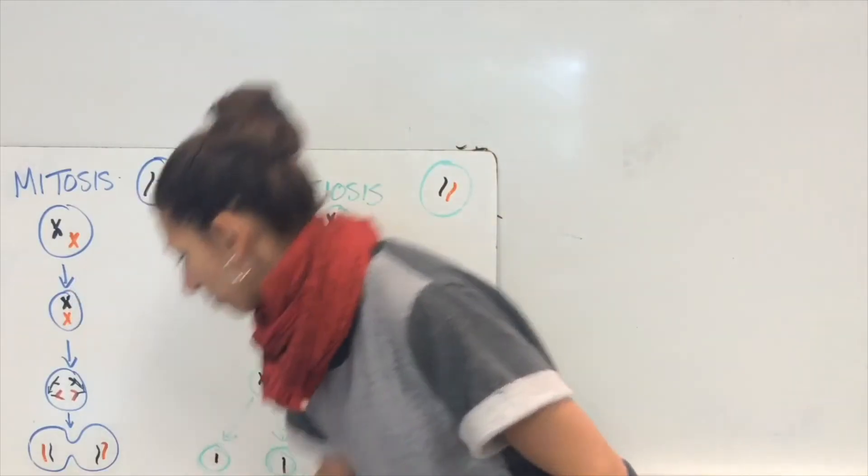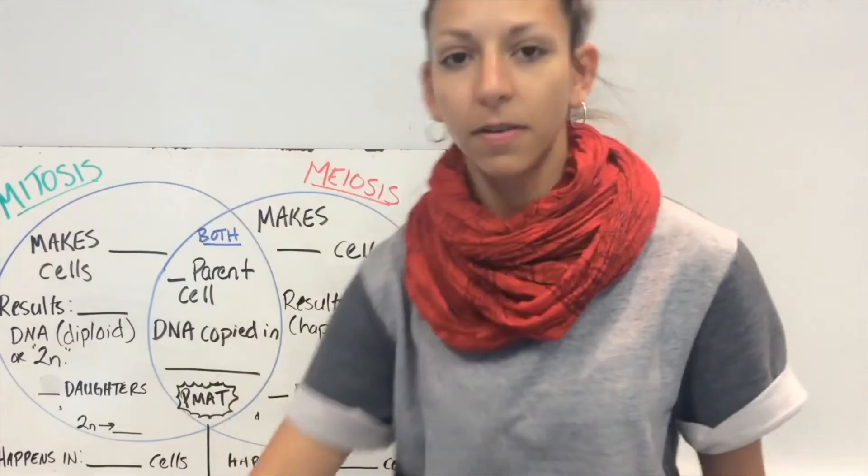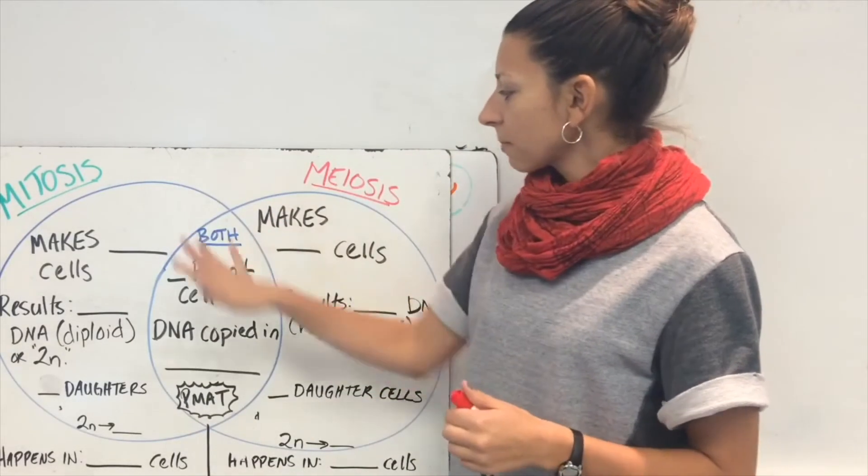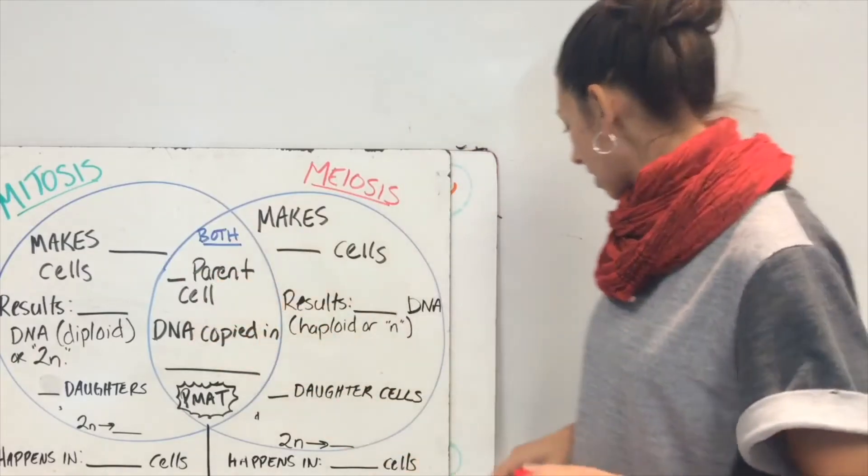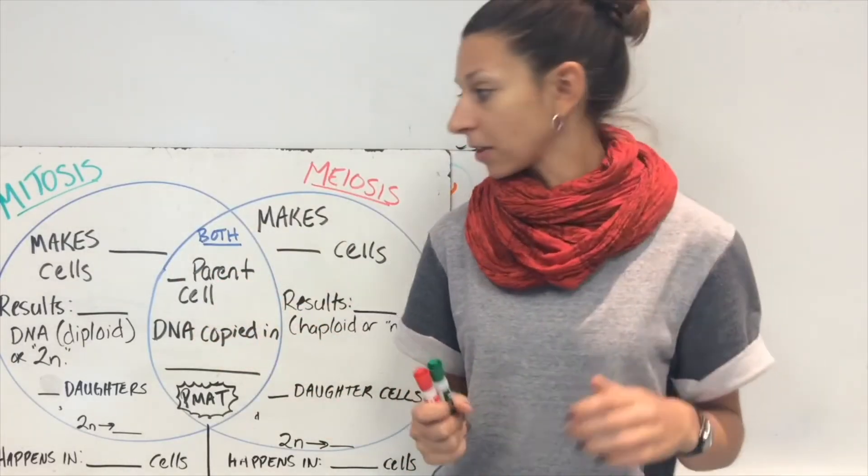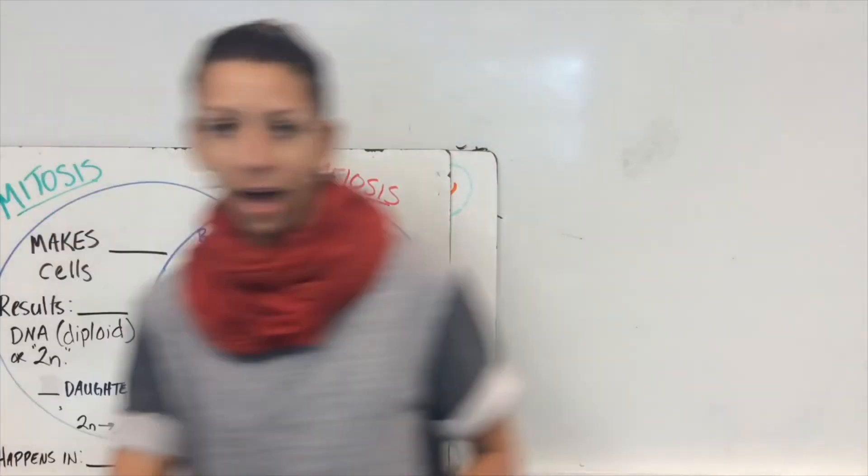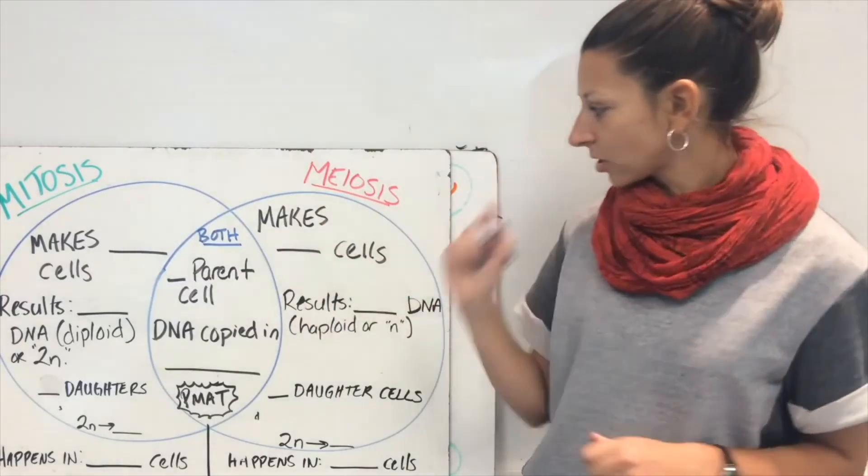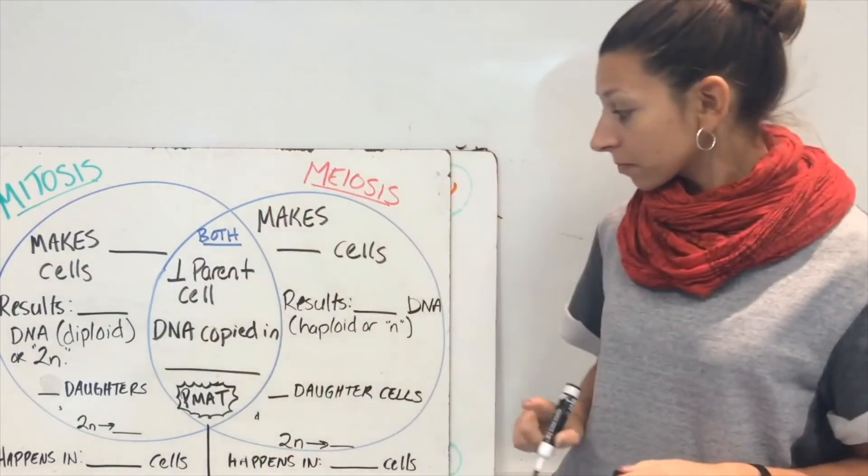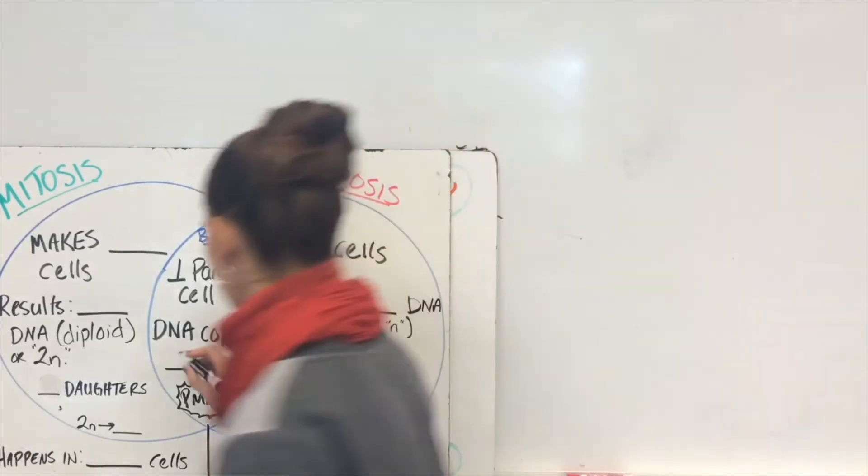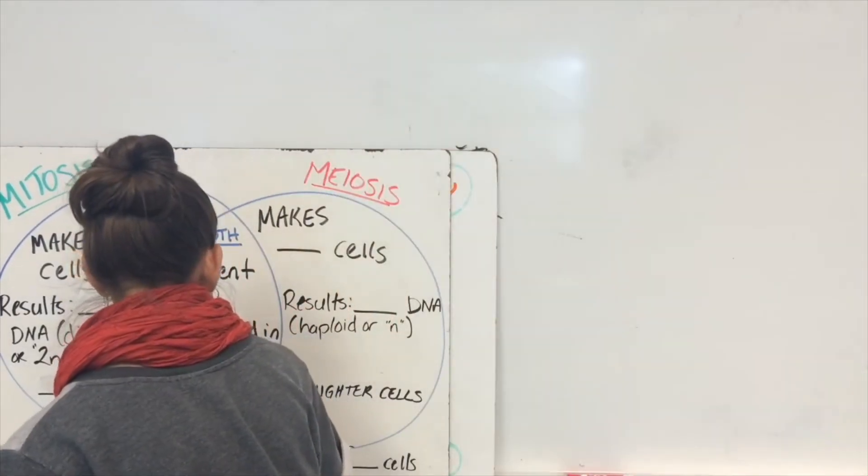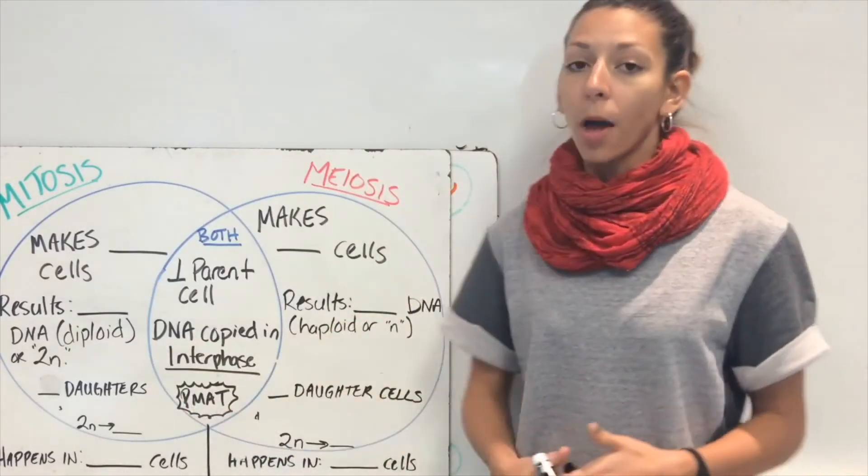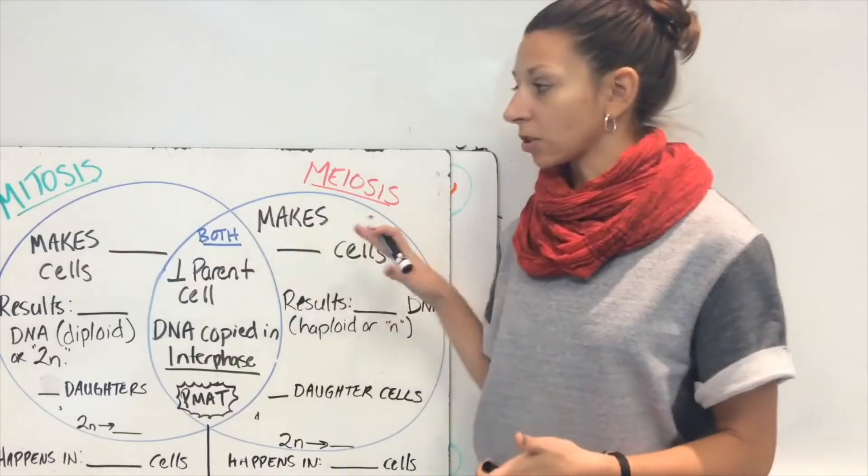All right, so let's get to the actual Venn diagram. You guys know you love Venn diagrams. All right, so we're going to fill this in. You can fill along with me. Let's look at the both section first. Now these are the things that are similar between both of the different types of cell division. So in both mitosis and meiosis, we are starting with one parent cell. The DNA is going to be copied in interphase and PMAT, prophase, metaphase, anaphase, and telophase. It's going to be the process that both of these go through.